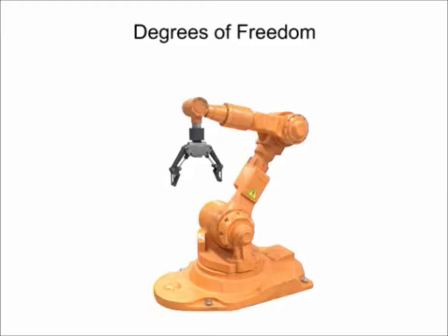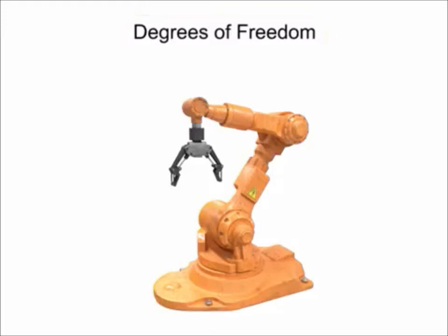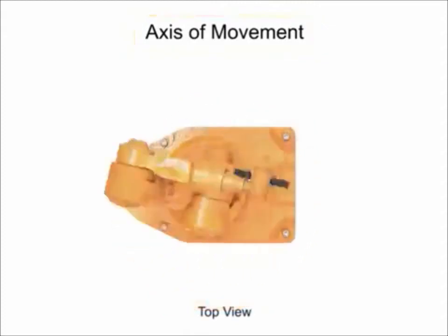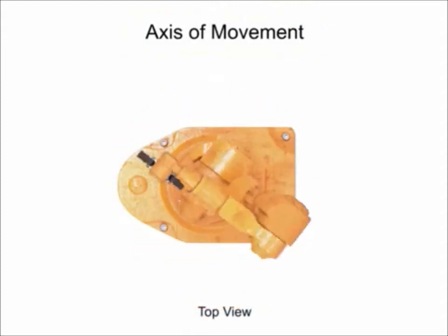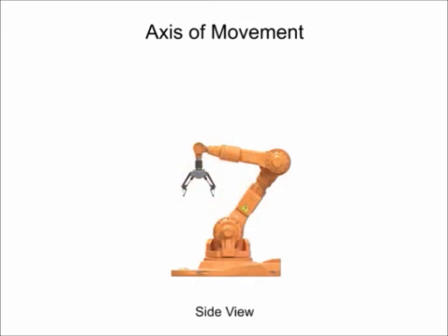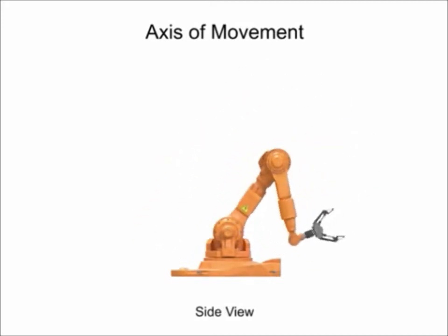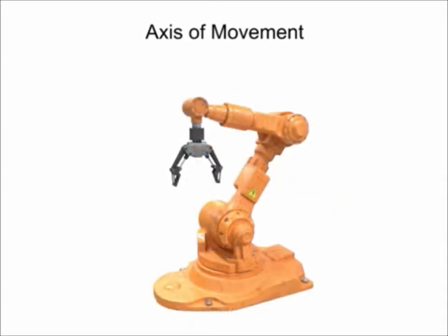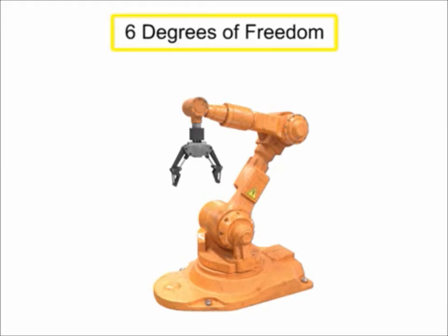Robots come in all different shapes and sizes, but are frequently classed by their degrees of freedom. Each direction of movement on the robot is considered an axis of movement. This robot rotates at the waist, bends forward and back at the shoulder, and moves vertically at the elbow. Each single movement axis is equal to one degree of freedom. This particular robot is equal to six degrees of freedom.